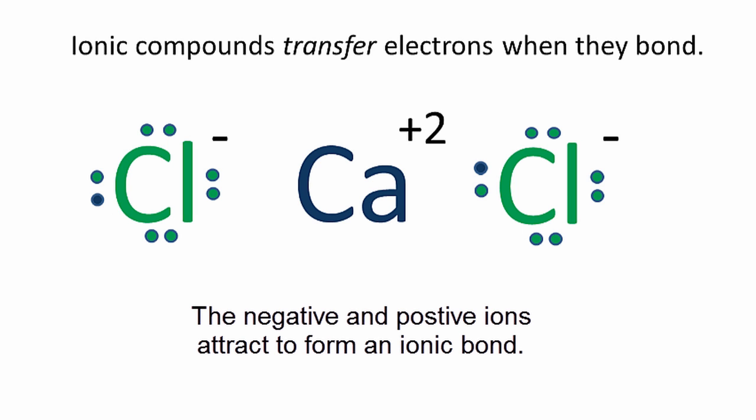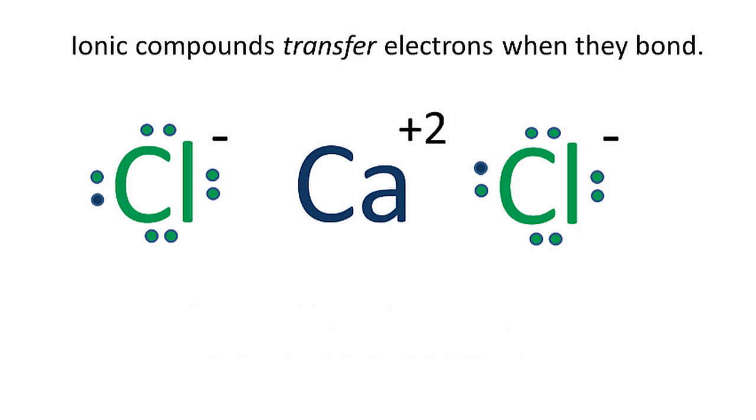So at this point, the calcium has lost its valence electrons, and each chlorine now has 8 valence electrons. It has an octet. So by transferring those electrons, the chlorines have achieved an octet.